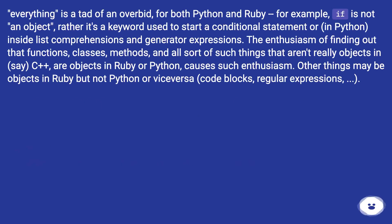Everything is a tad of an overbit for both Python and Ruby. For example, if is not an object, rather it's a keyword used to start a conditional statement or, in Python, in side-list comprehensions and generator expressions.